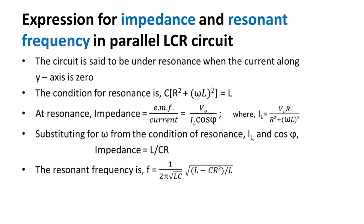A series resonant circuit is known as an acceptor circuit. A parallel resonant circuit is known as a rejector circuit because at resonance the impedance of the circuit is at its maximum, thereby suppressing or rejecting the current whose frequency equals its resonant frequency. At parallel resonance, impedance increases, admittance decreases, and current also decreases.